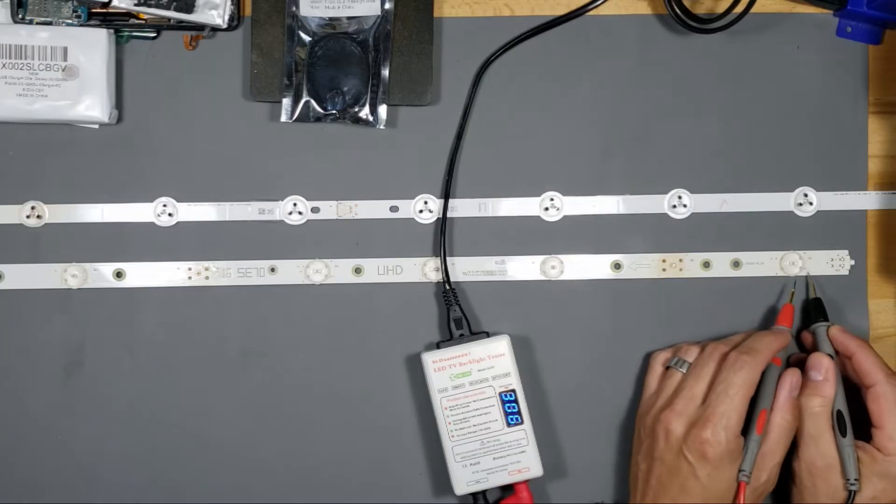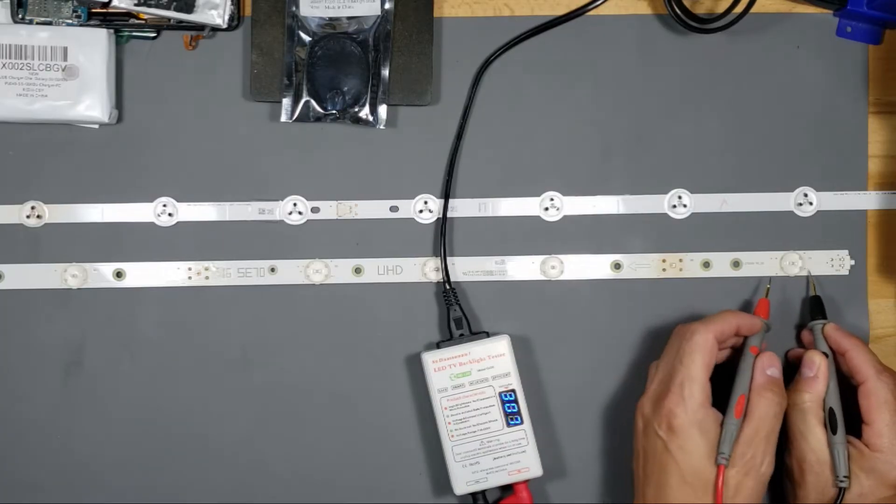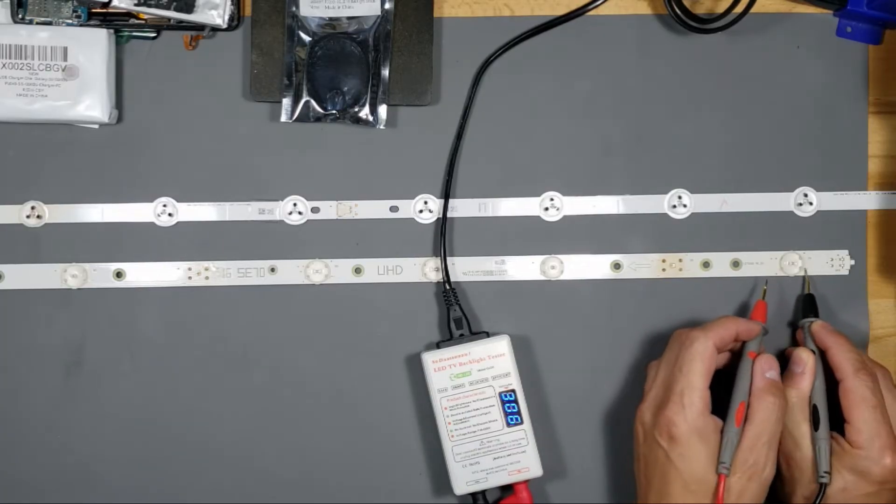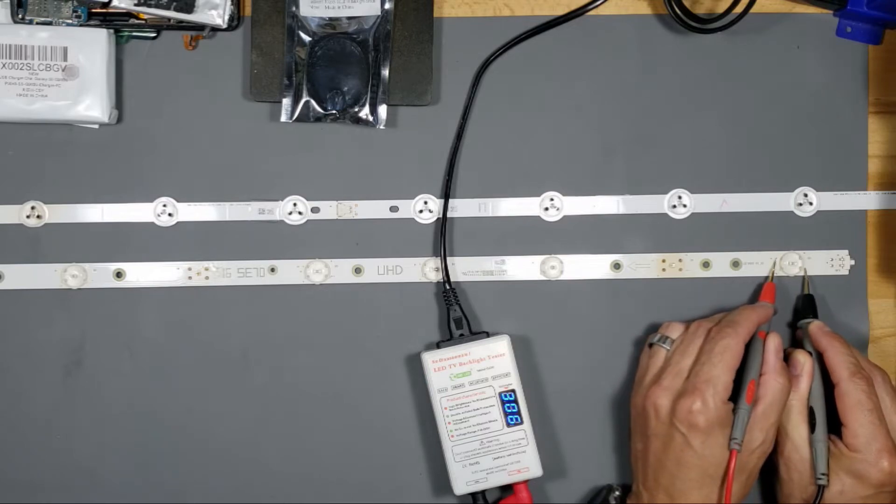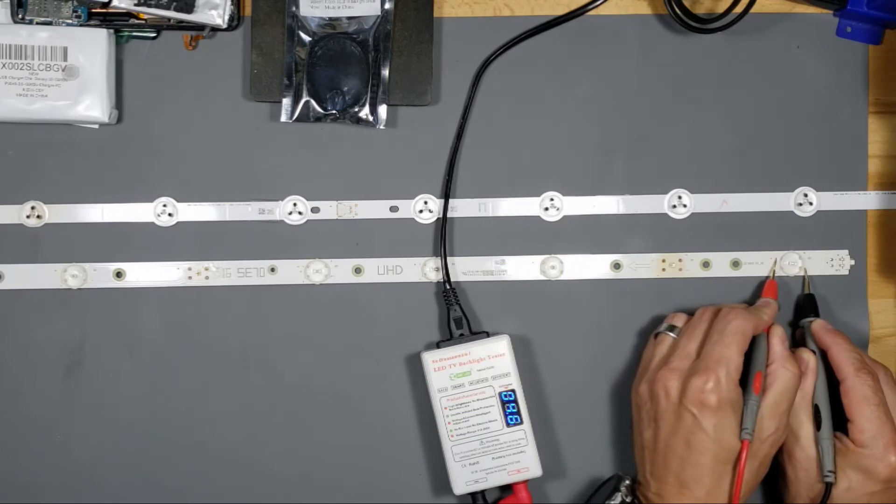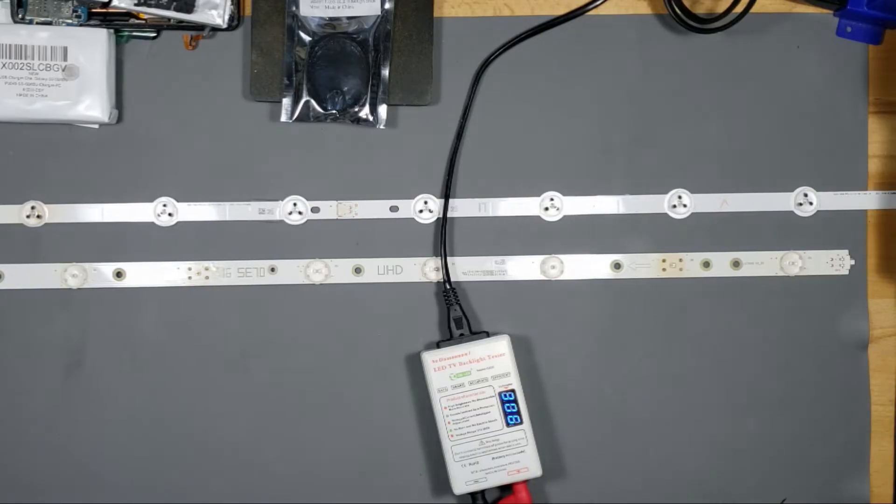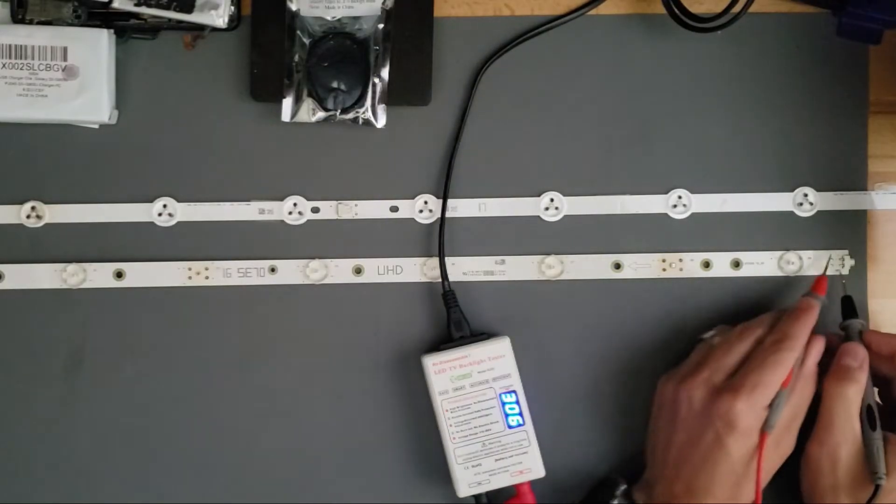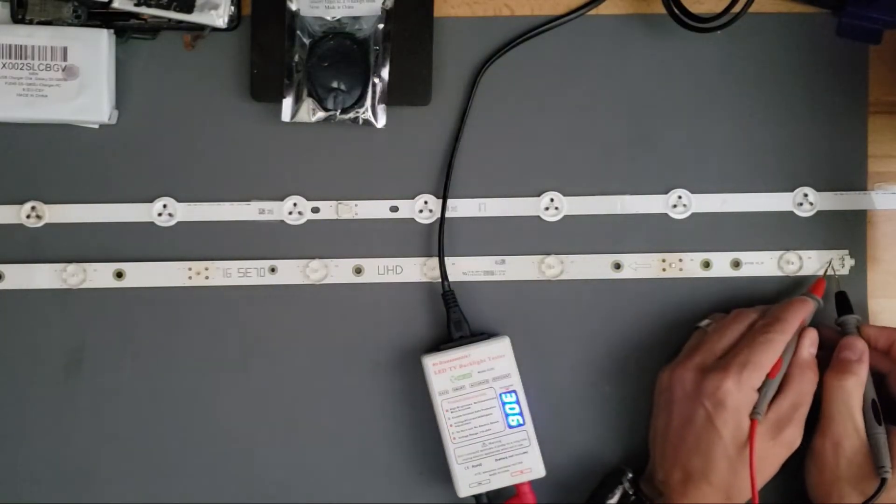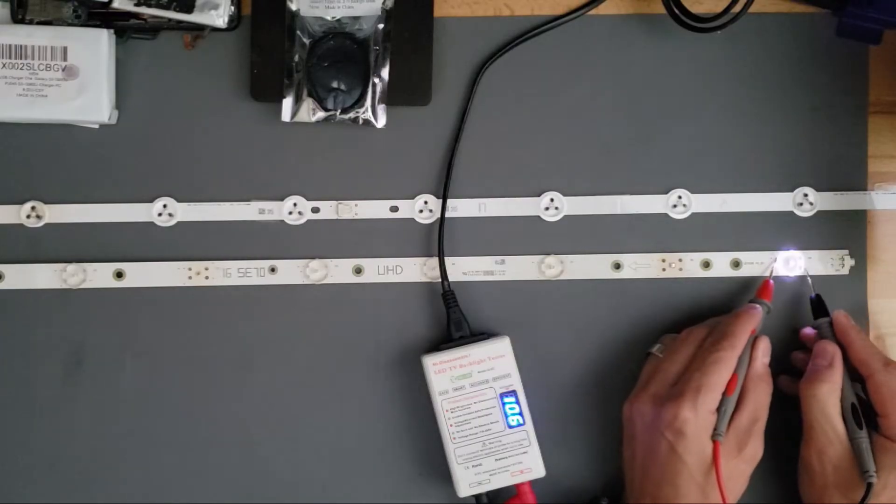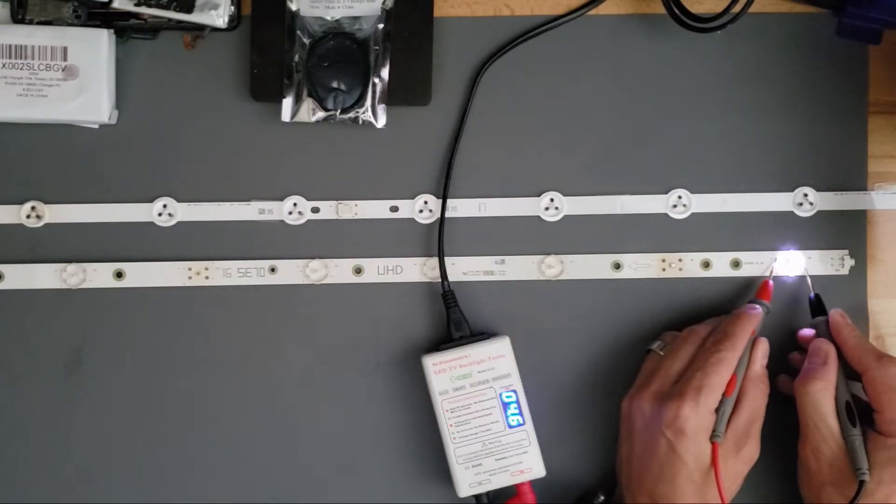So there are test points on the outside. Put my black negative probe on the negative test point and my red on the positive. And we can see that this one is working. Let's go ahead and turn off the lights so you get a better look. As you can see, the whole LED strip is not lighting up. But if we test each individual LEDs, they are working.